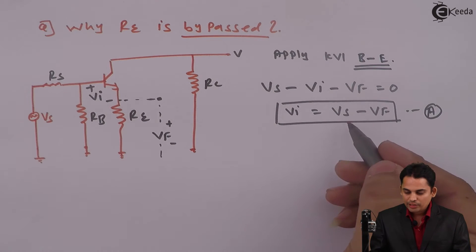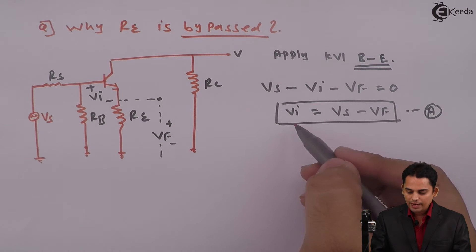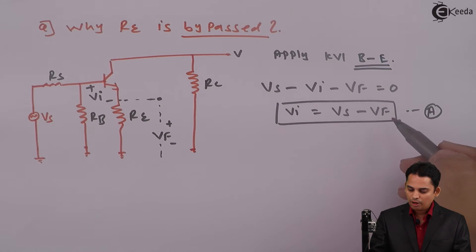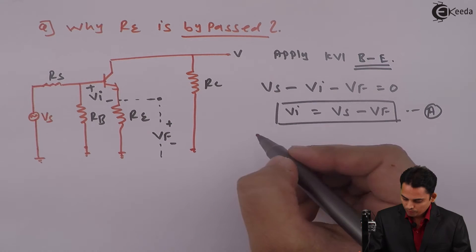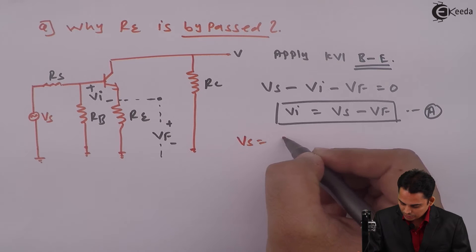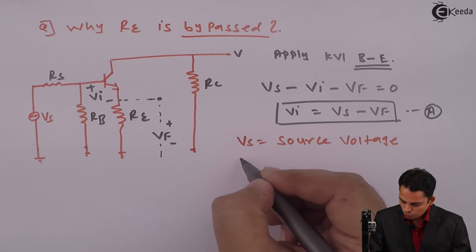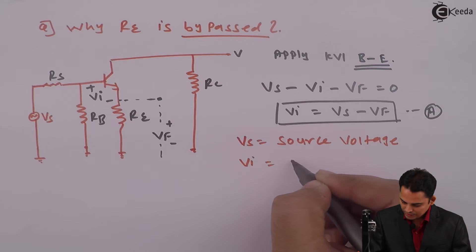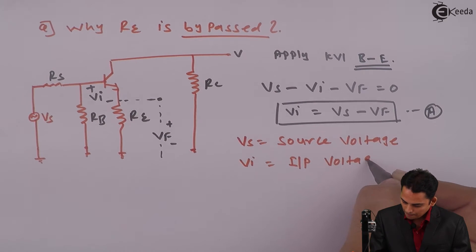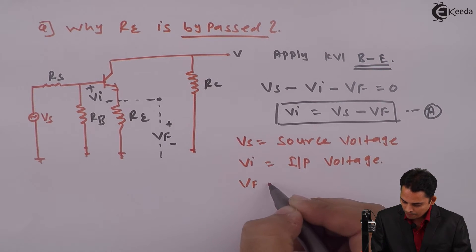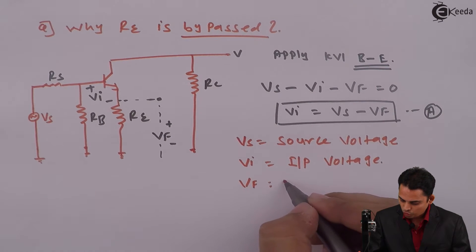Where VS is source voltage, VI is input voltage, and VF is feedback voltage.